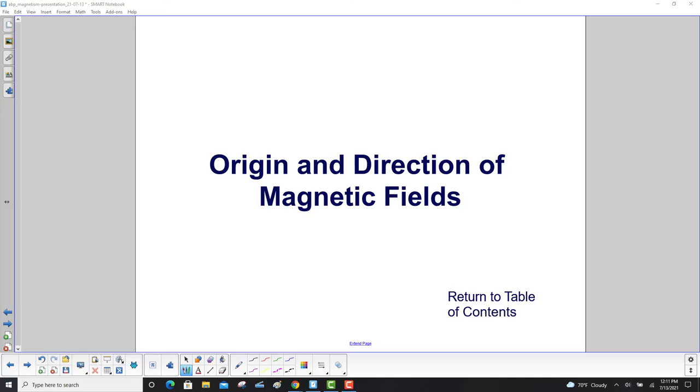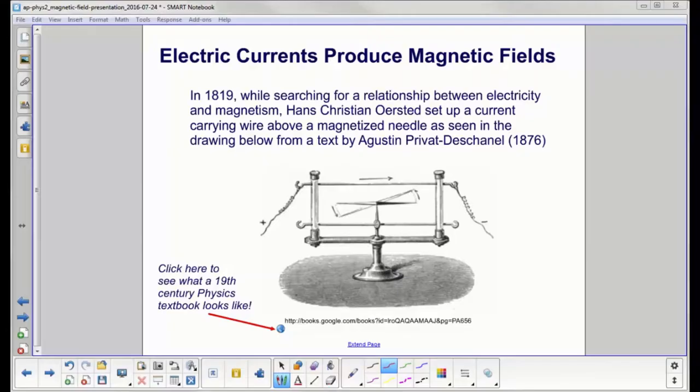Origin and direction of magnetic fields. In 1819, while searching for a relationship between electricity and magnetism, physicists wanted to understand closely related phenomena. For example, positive charges repel each other, and north poles repel each other. They both have forces and fields that look very similar.